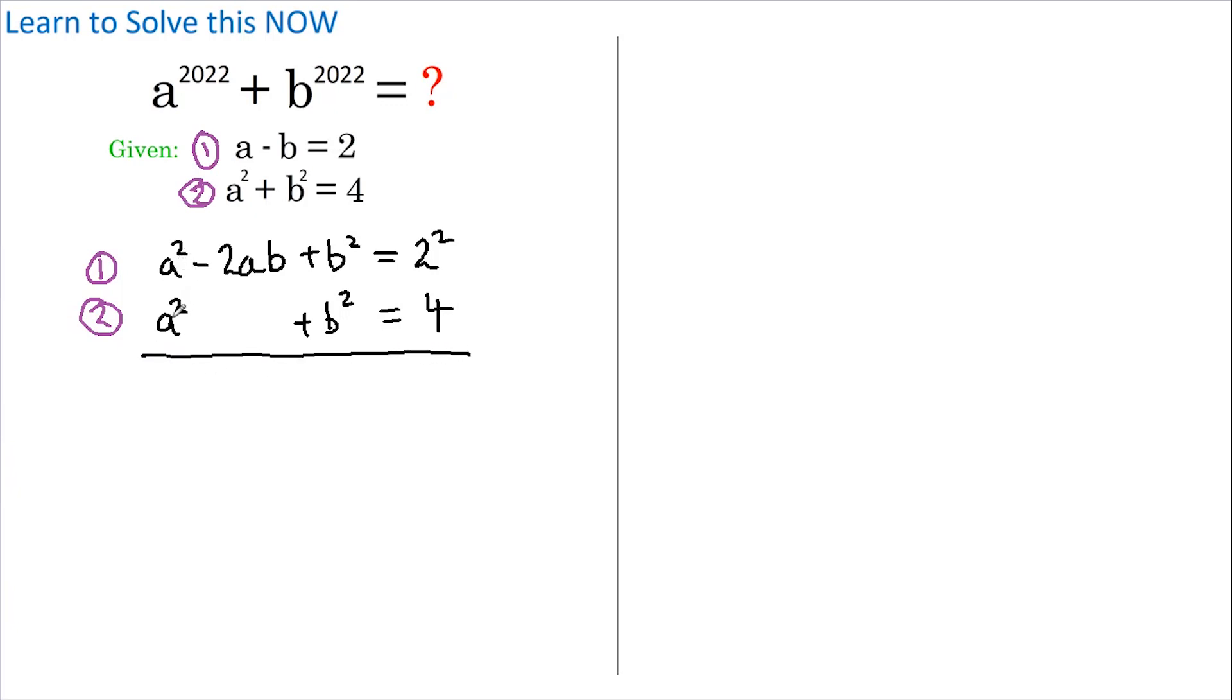We get a squared less a squared is nothing. This gives us negative 2ab, and this equals 0.